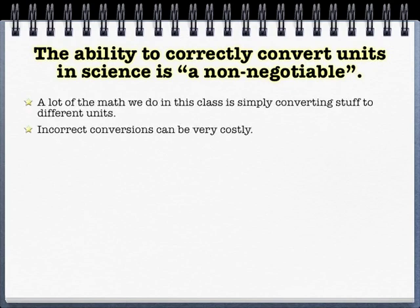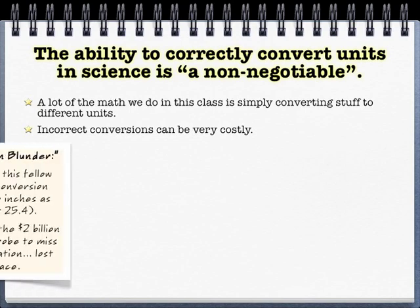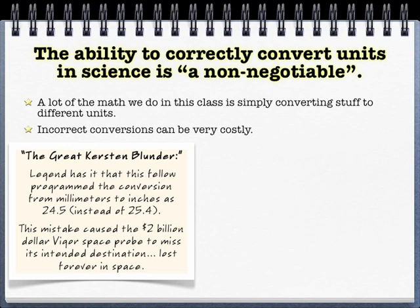There are certainly people who have made simple conversion mistakes that cost them a lot more than points. Two examples. One of them, the great Kirsten Blunder. Legend has it that this poor fellow used the wrong conversion between millimeters and inches and caused a space probe to miss Venus and hurtle off into space, lost forever. Now, I call that legend has it because I can't find any information to verify the existence of this person or the Vigor space probe, but I'm looking into that.